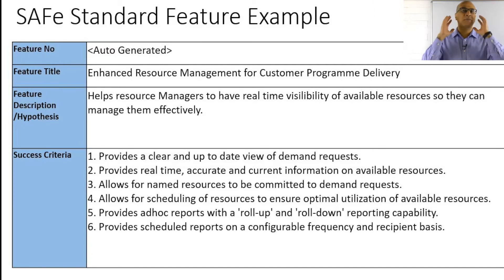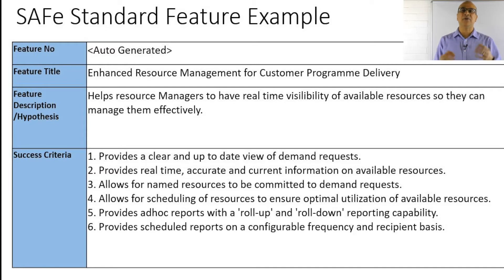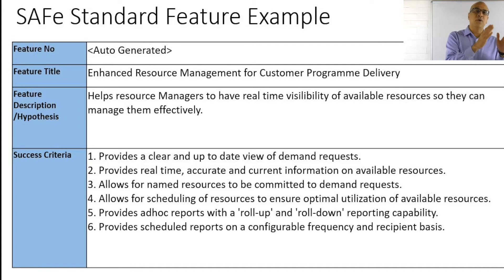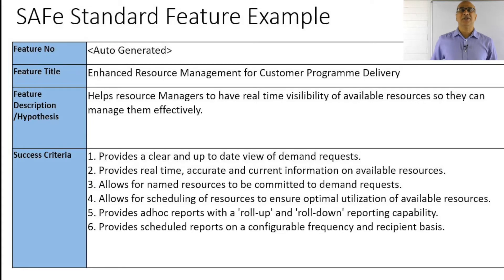Leave the how up to the teams. If you're a product manager helping to put this together, or a release train engineer coaching your product manager, make sure you separate that — don't go down into the how, because you're limiting the creativity of the team in how they address these requirements. So the criteria are very much on the what side of things, and they're straightforward and simple to understand. When you have all six of these criteria met, you can set your feature to done — that is your success criteria.